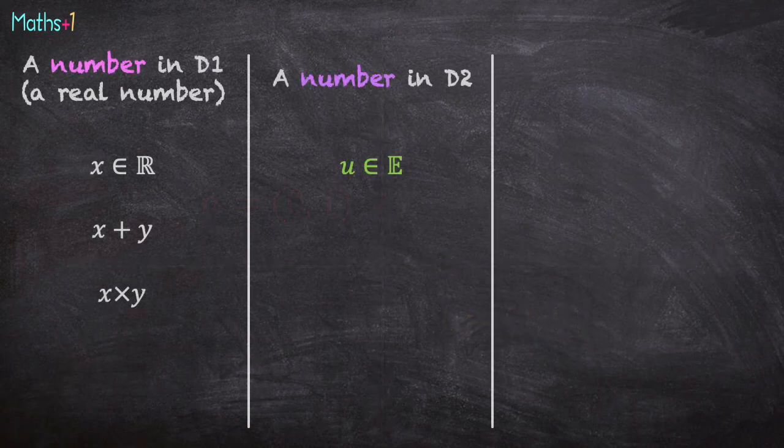So far, we have created a new kind of number, numbers in dimension 2. The element of a set that we have called E.